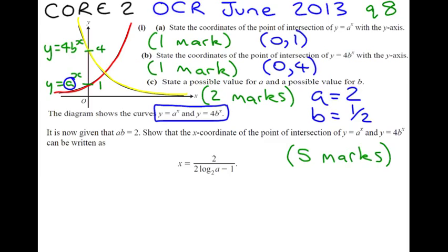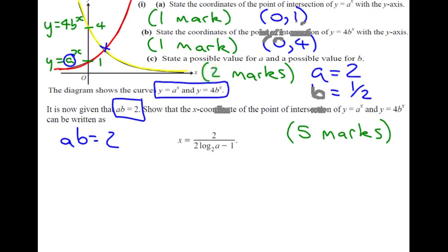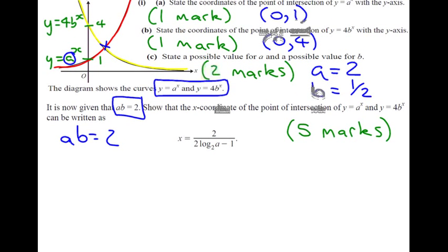The second part of the question, part 2, are the x-coordinates where it intersects. So ab equals 2, that's some information that we're given. This equation shows that the x-coordinate of the point of intersection of these two graphs can be written in this form. So, when we've got two graphs intersecting, what we're talking about is the two equations being equal to each other. So we can write down straight away, we know that 4b to the power of x equals a to the power of x.